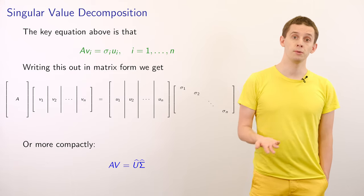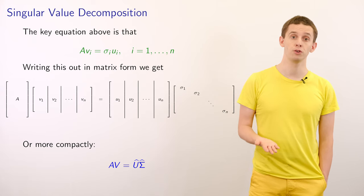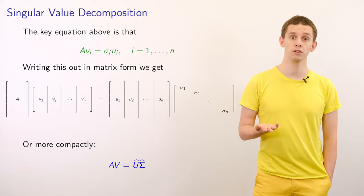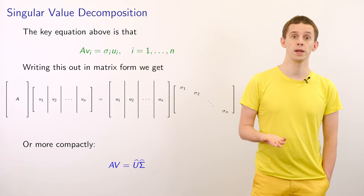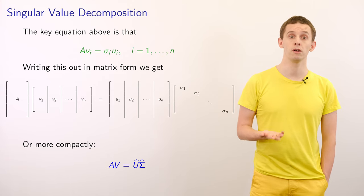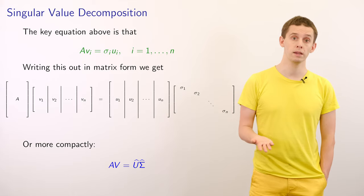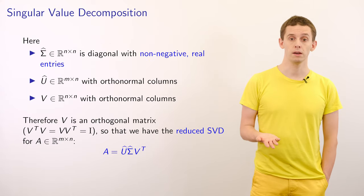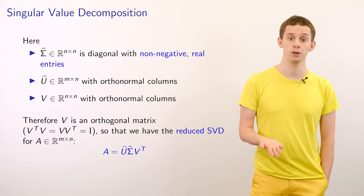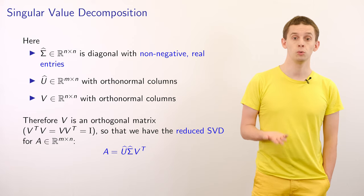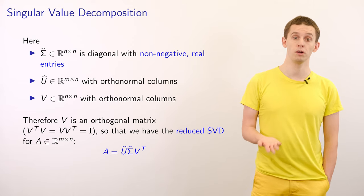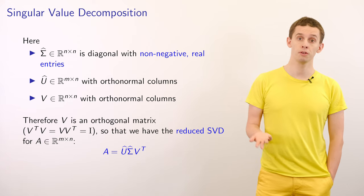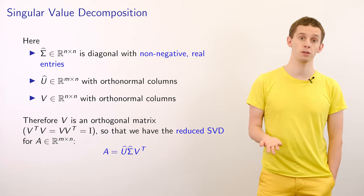If we now write out this key equation in matrix form, we'll have our matrix A applied to our matrix of vectors V equal to our matrix of vectors U multiplied by a diagonal matrix with singular values sigma_1 to sigma_n along the diagonal. More compactly, A multiplied by V equals U-hat times Sigma-hat, where Sigma-hat is an n by n diagonal matrix with non-negative real entries, U-hat is an n by n matrix with orthonormal columns, and V is an n by n matrix with orthonormal columns. Therefore V is an orthogonal matrix, so V-transpose V equals V V-transpose equals the identity.